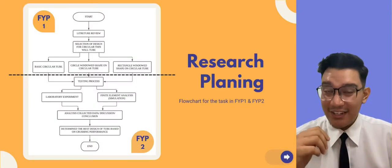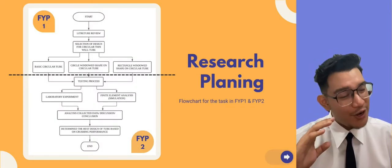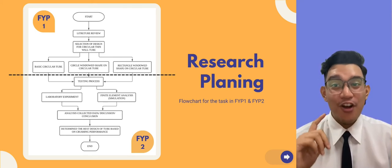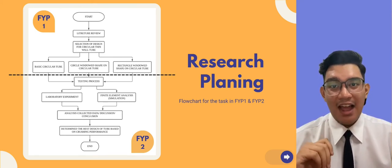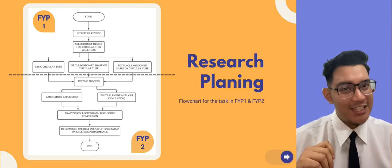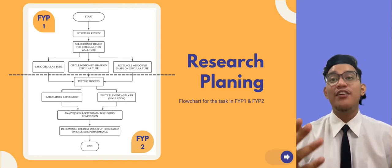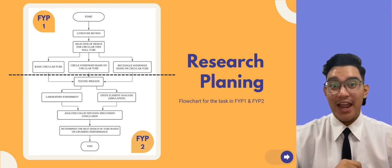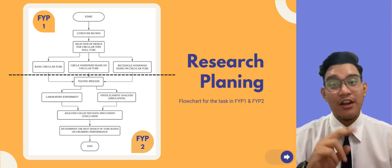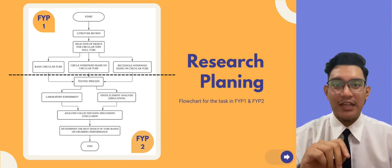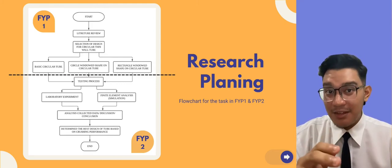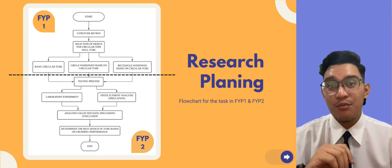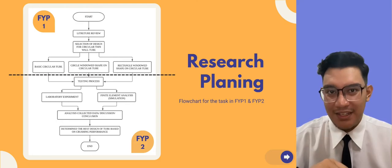Here is the research planning for the whole FYP. For FYP1, work was completed up to the selection of design for the circular thin wall tube. The research then continues in FYP2, including the testing process until the best design of tube is determined.